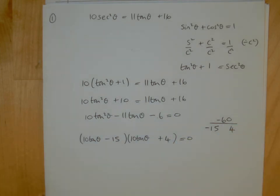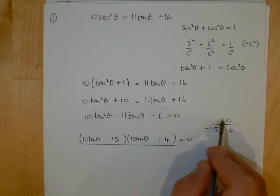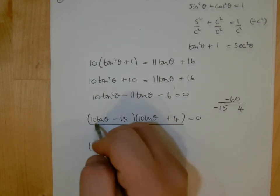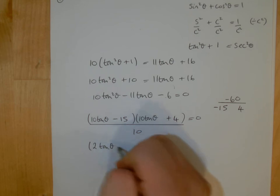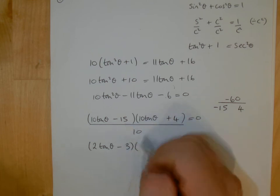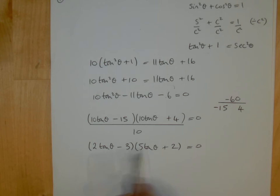Put the bracket back as equal to 0. Don't forget, with this method you've got to divide, because we multiplied by 10 to get -60. In the first bracket, divide by a factor of 5, so we get 2tan θ - 3. In the second bracket, divide by a factor of 2, so 5tan θ + 2. It's always good to multiply that out just to check. I get 10tan²θ + 4tan θ - 15tan θ - 6, which gives me that, so it's perfect.